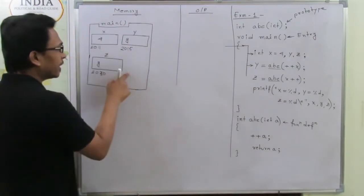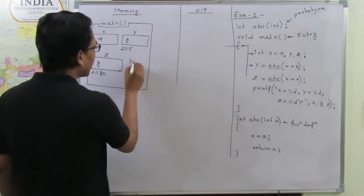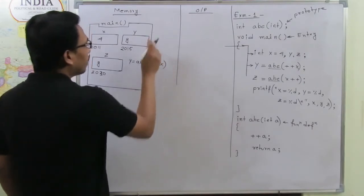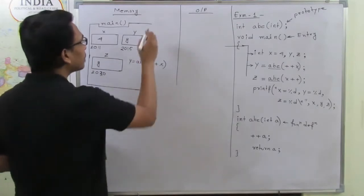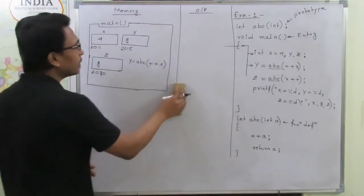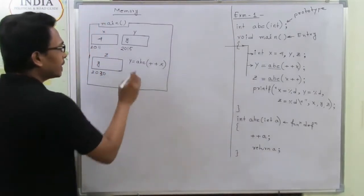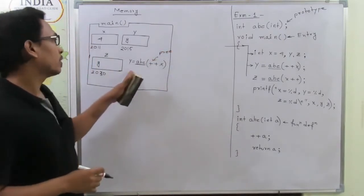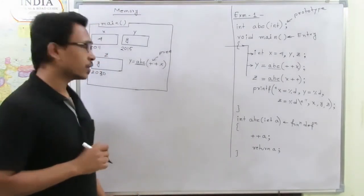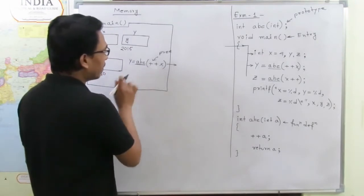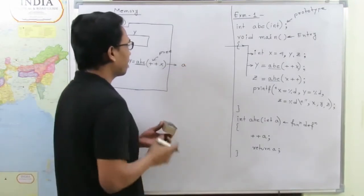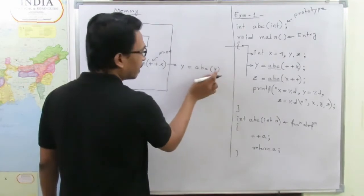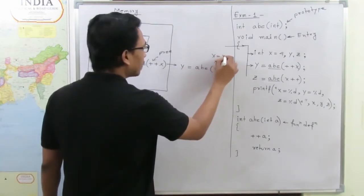The next instruction is `y = abc(++x)`. We have two things here: a call to the function and a pre-increment operation. We can simplify this instruction as: y = abc(x), but before this, x = x + 1 (pre-increment). So the pre-increment step must happen first.